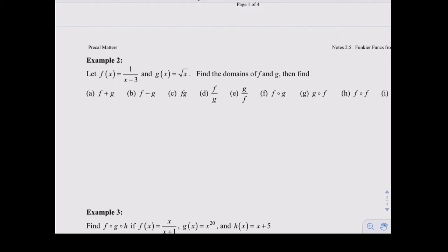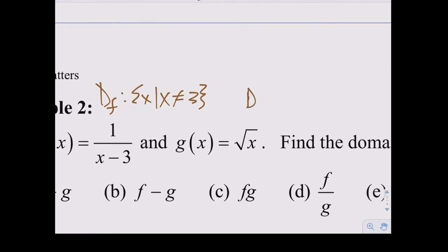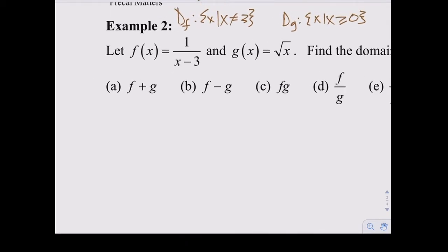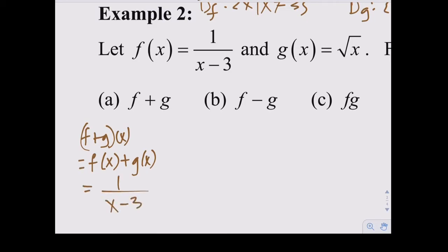Let f = 1/(x-3) and g = √x. Find the domains of f and g, then find their combinations. Domain of f: x cannot equal 3. Domain of g: x must be greater than or equal to zero. For f+g, written as (f+g)(x) = f(x) + g(x), that equals 1/(x-3) plus √x.